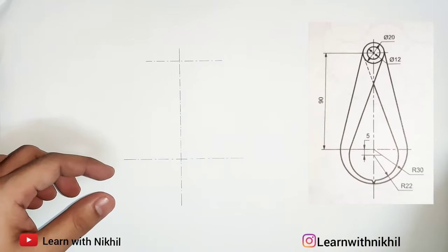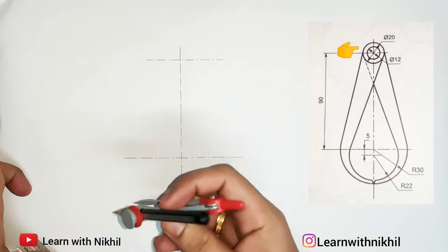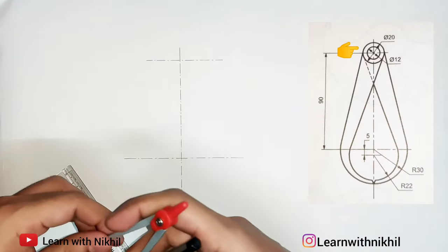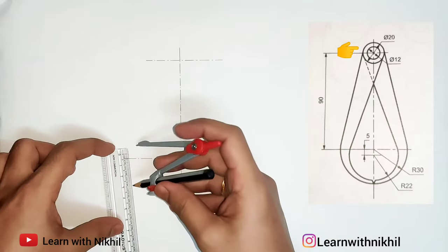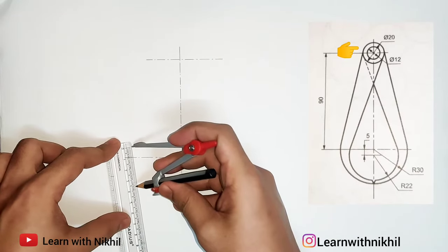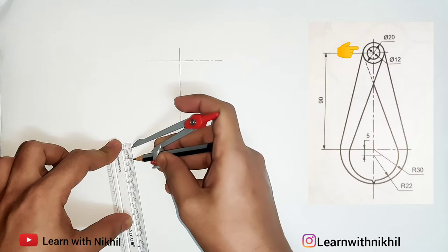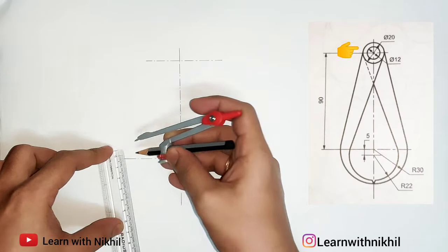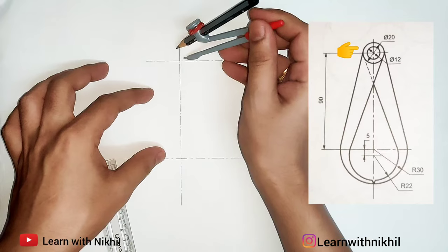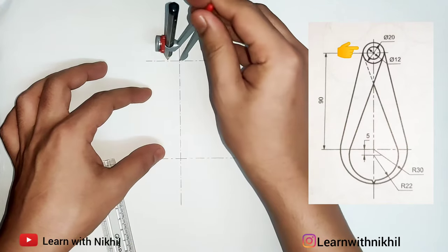Now next, on the top we'll draw these two circles. One with the diameter given of 20, so on compass we'll take radius of 10 millimeter. Keep the pointer here and we'll draw the circle.